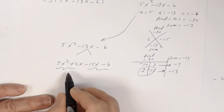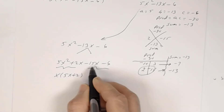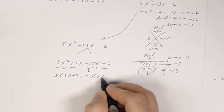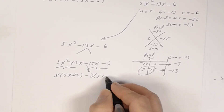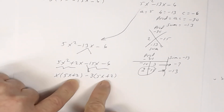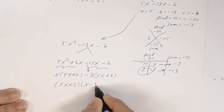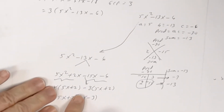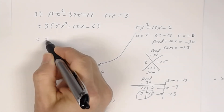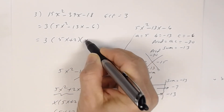Group the first two and the last two. From the first group, factor out x to get x times (5x plus 2). From the second group, factor out negative 3 to get negative 3 times (5x plus 2), since negative 3 times positive 2 equals negative 6. Both groups share (5x plus 2), so factor that out to get (5x plus 2)(x minus 3). But remember the GCF of 3 from earlier, so the complete answer is 3 times (5x plus 2)(x minus 3).